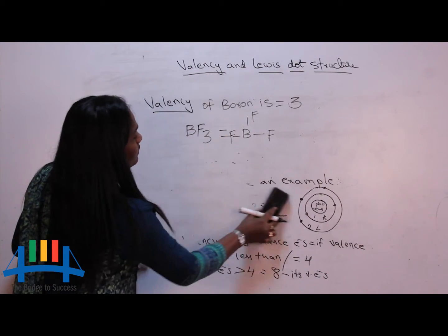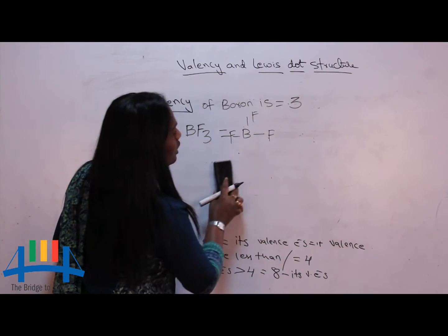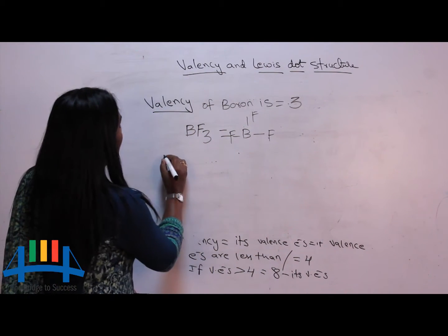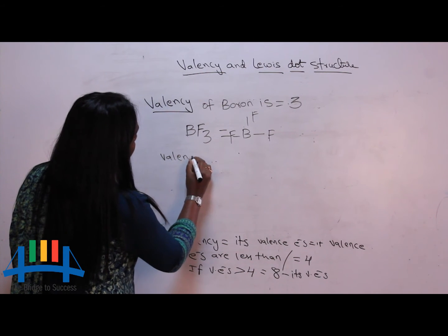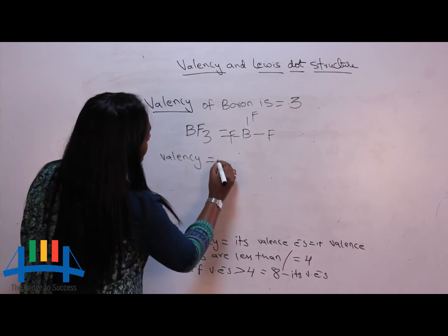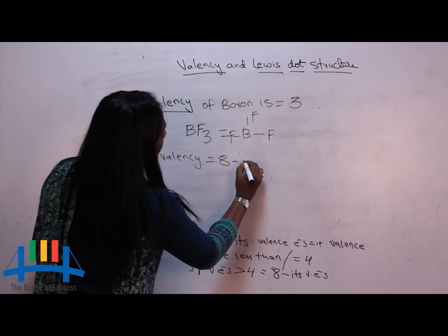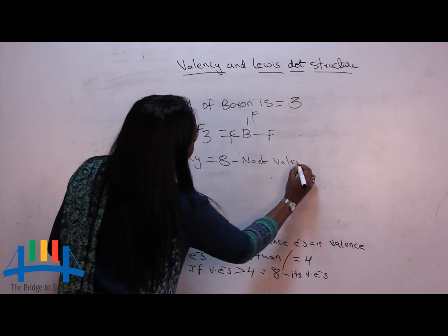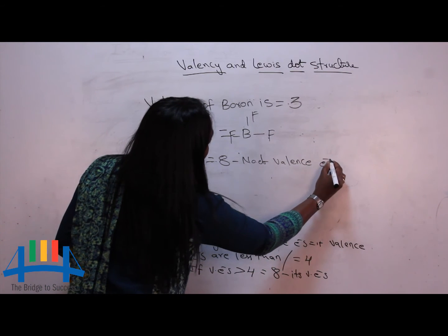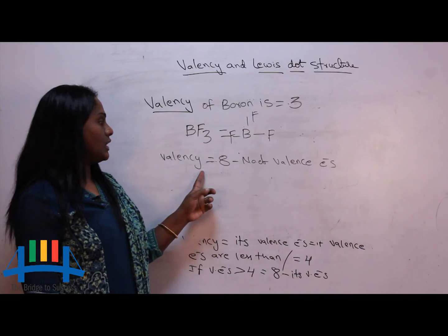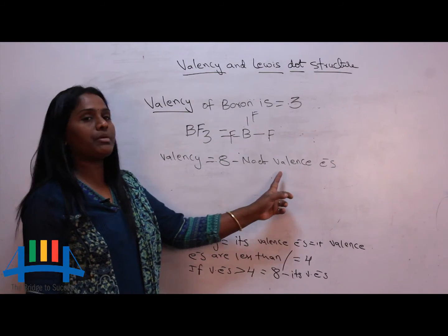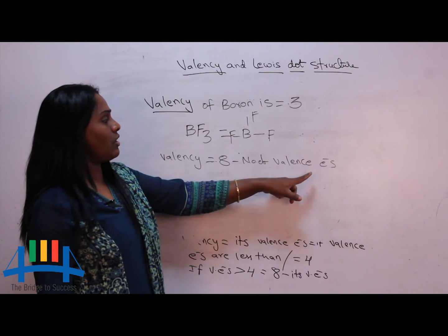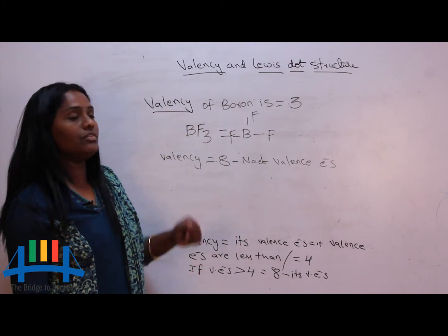Now, if valence electrons are more than 4, the formula is: valency equals 8 minus number of valence electrons. Valency equals 8 minus number of valence electrons, if valence electrons of any element are greater than 4.